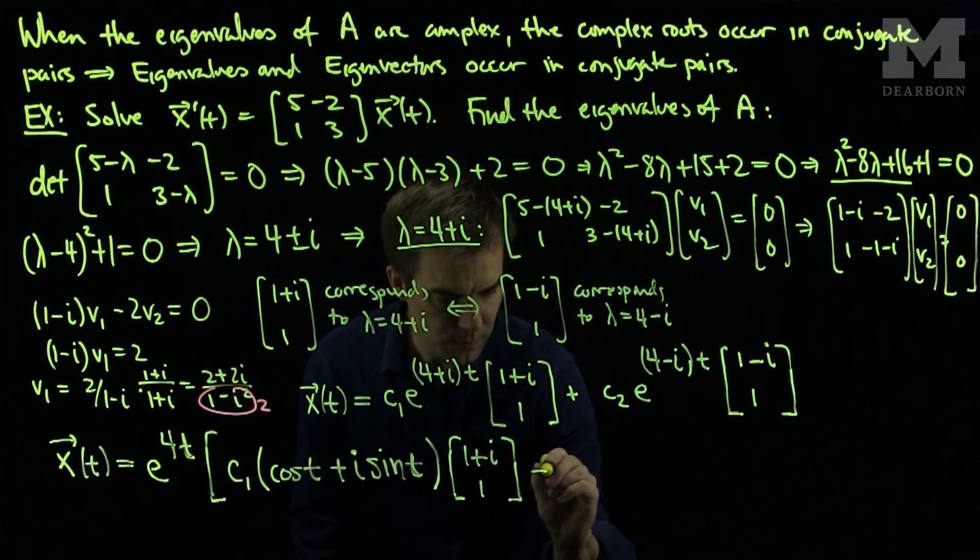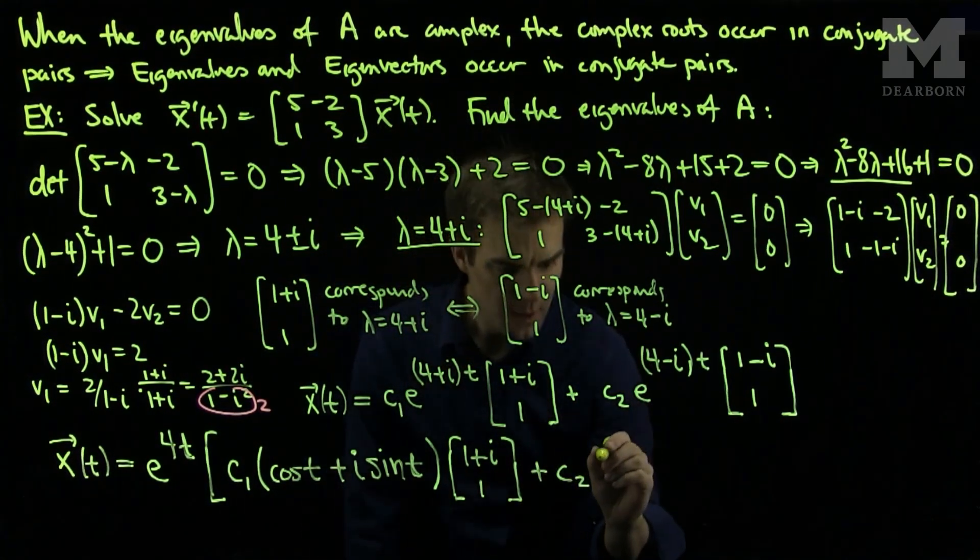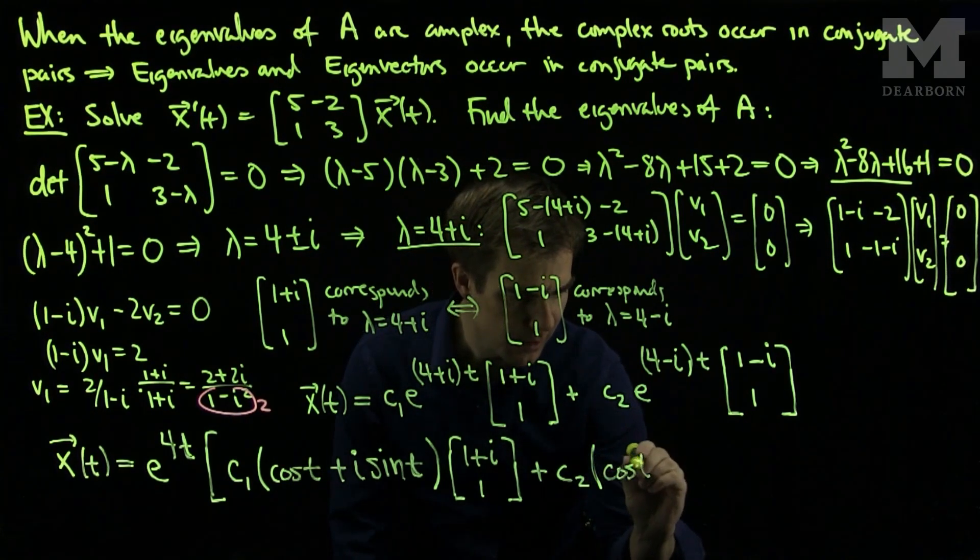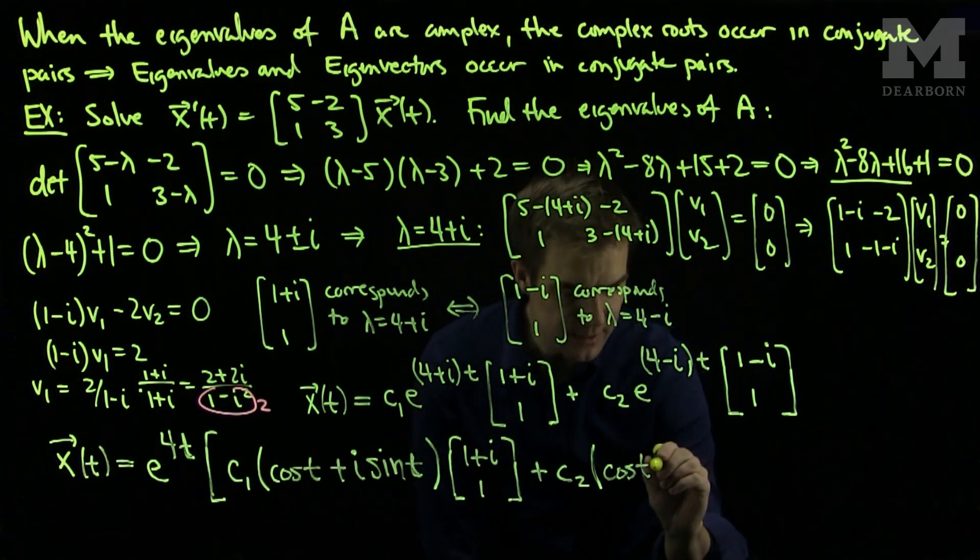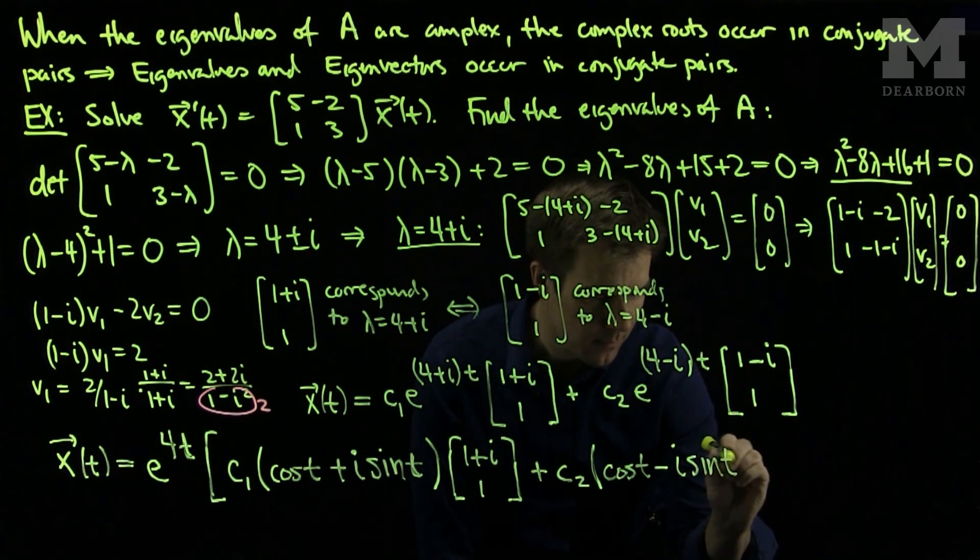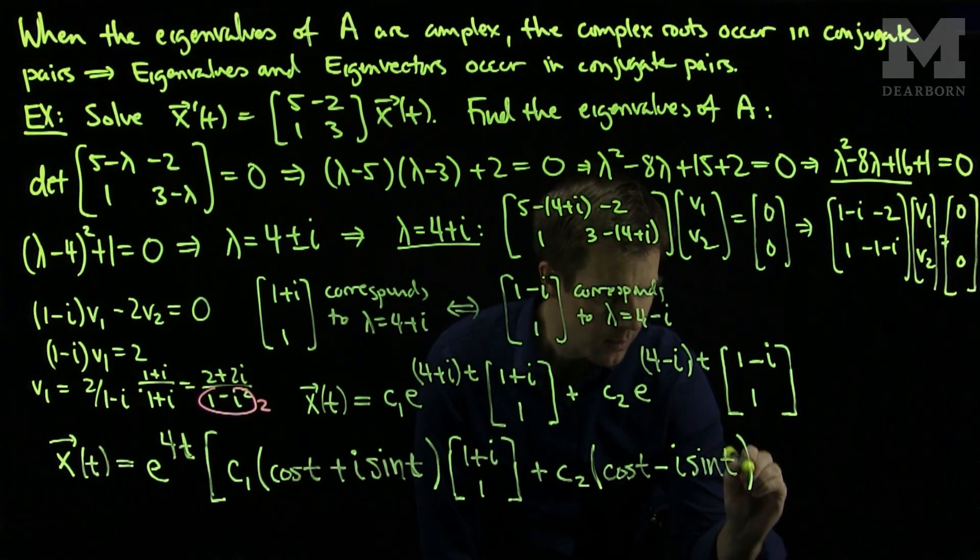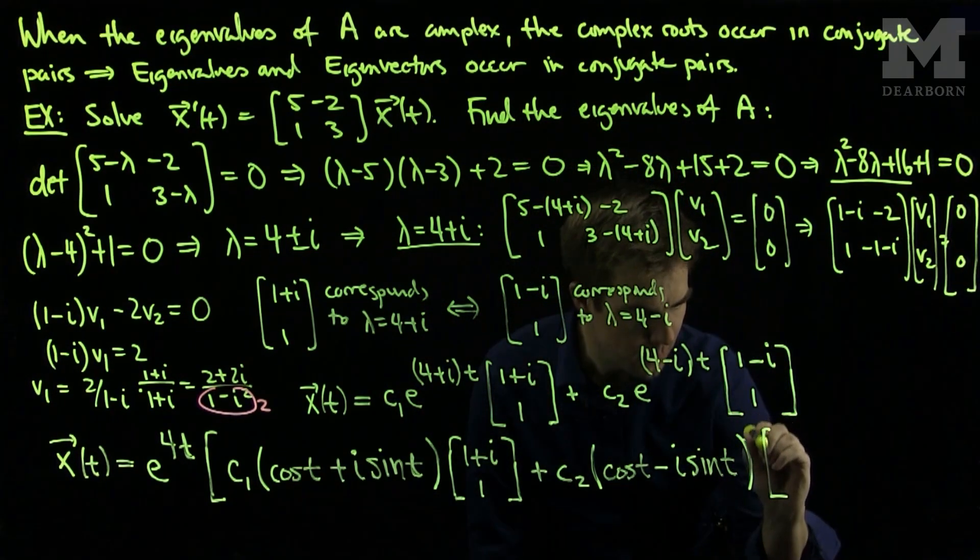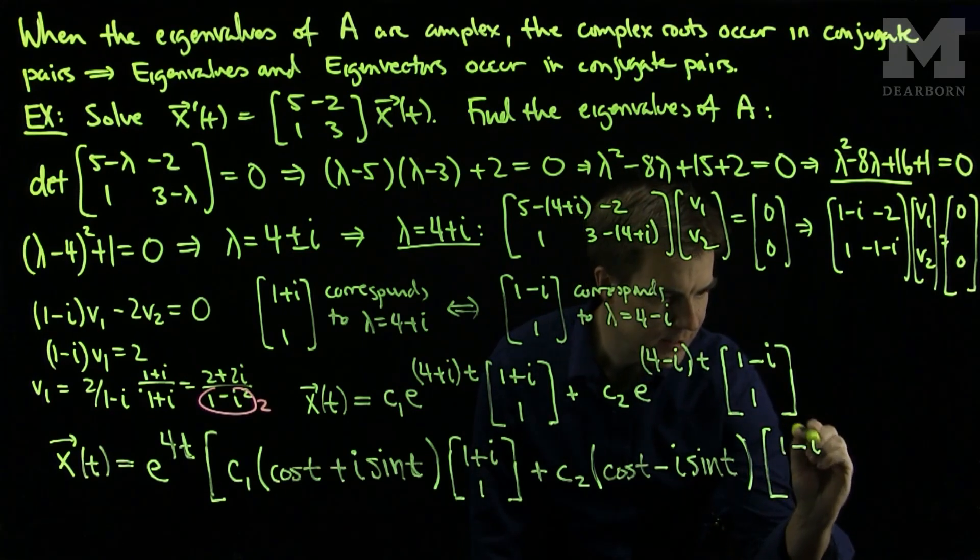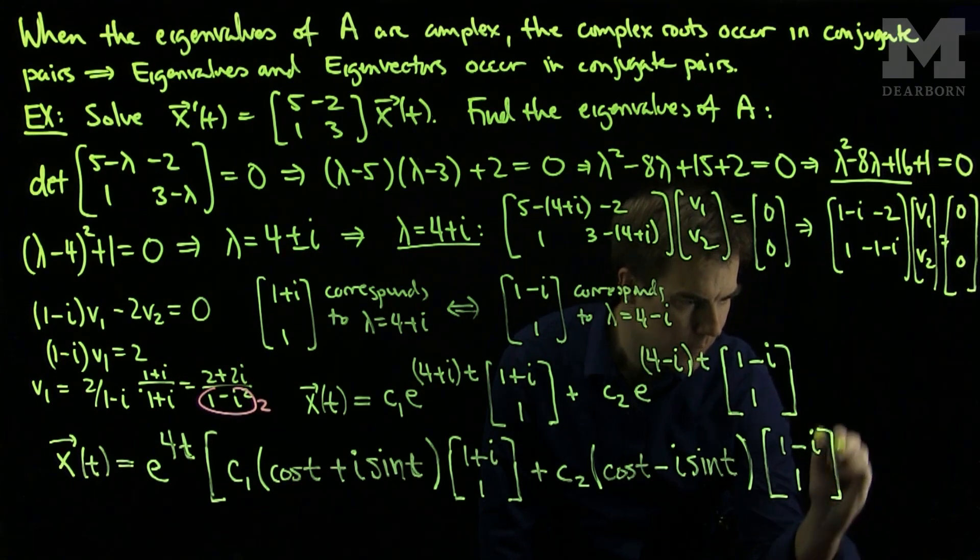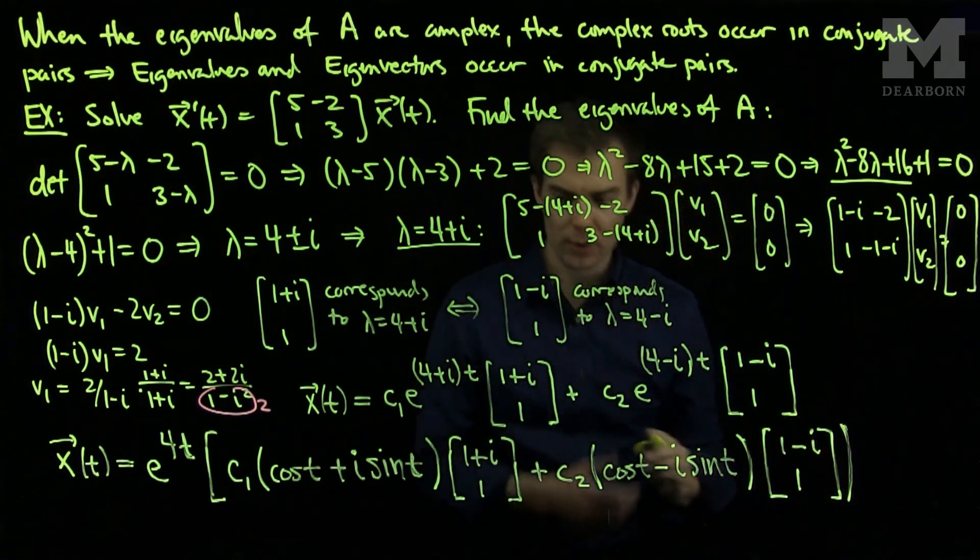Then I'll have c₂, and by Euler's formula again, cos(t) - i·sin(t), multiplied by its direction [1-i; 1]. Therefore, we have our solution.